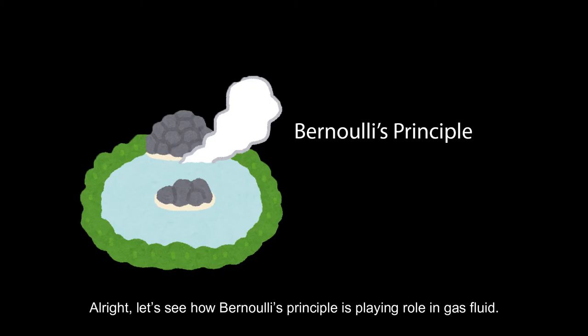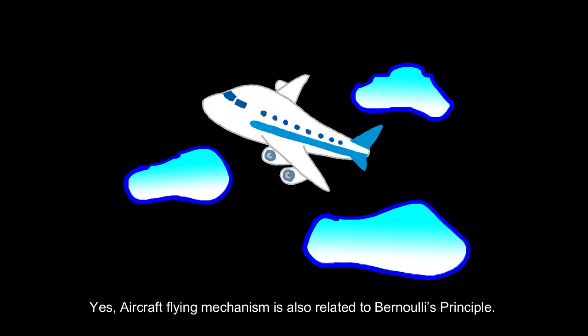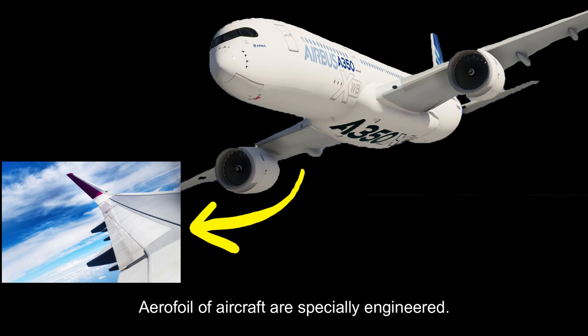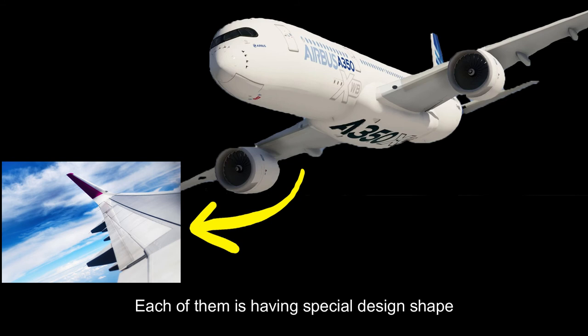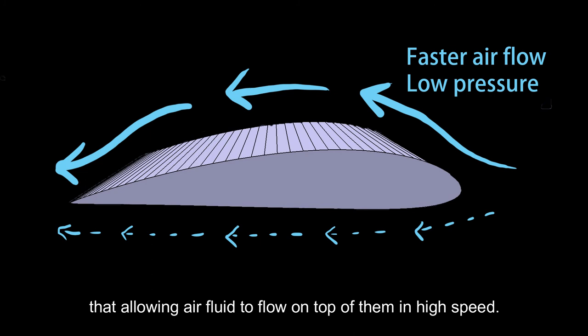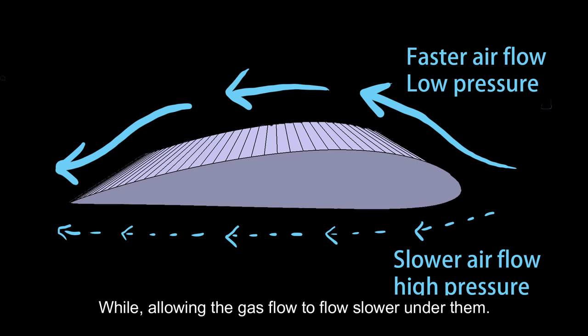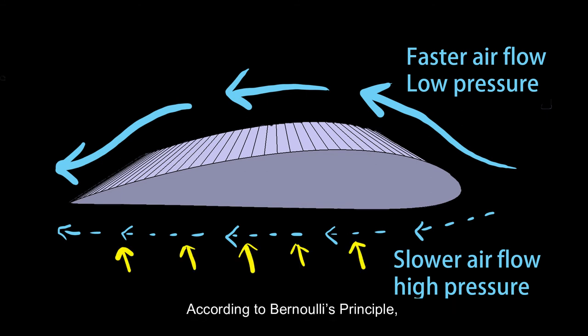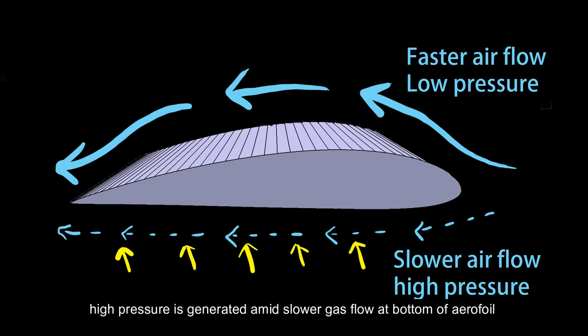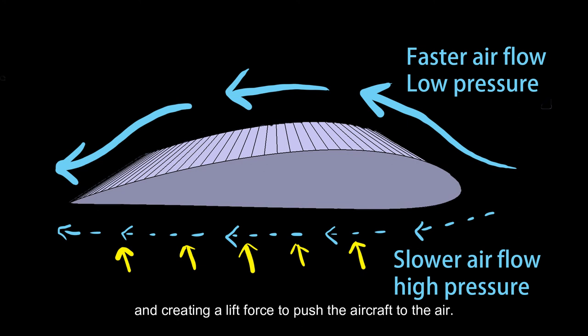Alright, let's see how Bernoulli's Principle plays a role in gas fluid. Have you ever been on a plane? Aircraft flying mechanism is also related to Bernoulli's Principle. Aerofoils of aircraft are specially engineered with a special design shape that allows air fluid to flow on top of them at high speed, while allowing the air flow to move slower underneath them. According to Bernoulli's Principle, high pressure is generated by the slower gas flow at the bottom of the aerofoil, creating a lift force to push the aircraft into the air.